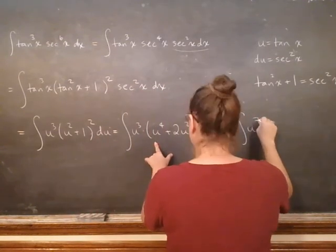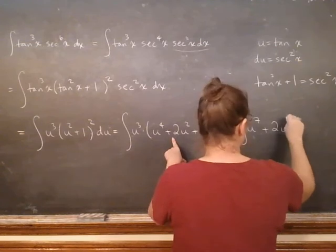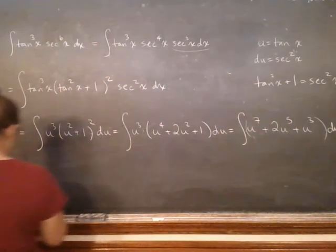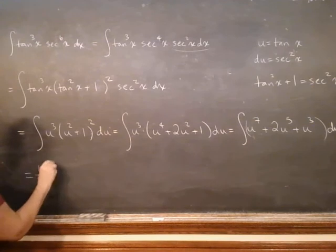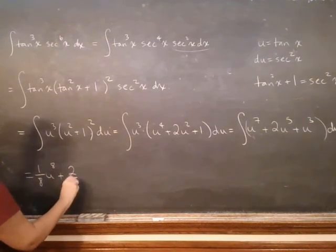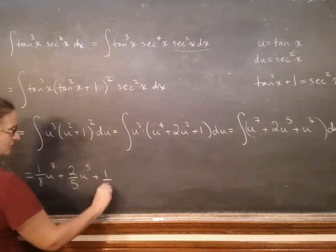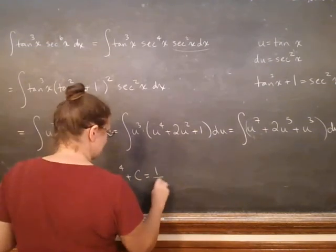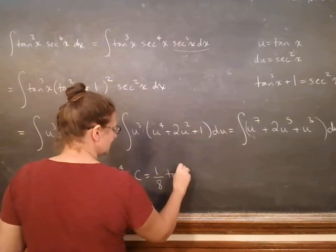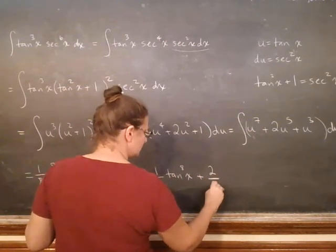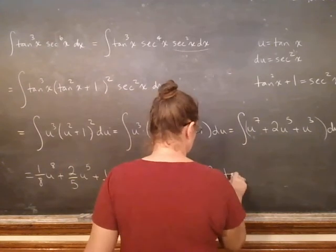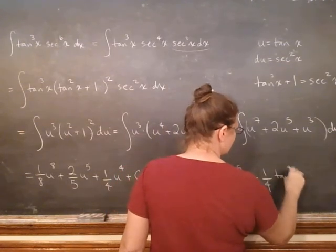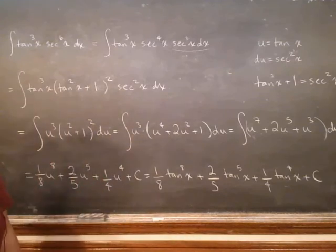So let me add these guys up. I've got 7, 5, 3, and then integrate. I've got 1/8 u to the 8th plus 2/5 u to the 5th plus 1/4 u to the 4th. And then putting in u equals tangent, 1/8 tangent to the 8th plus 2/5 tangent to the 5th plus 1/4 tangent to the 4th plus C. So there's my answer.